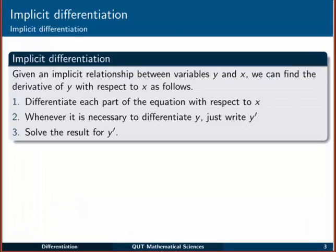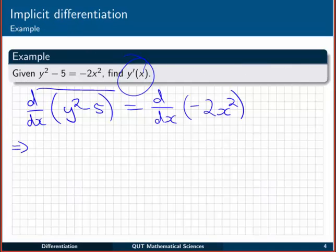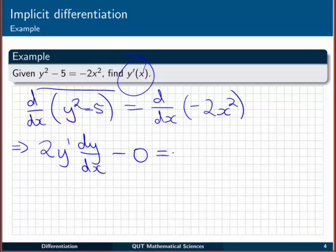We're going to get the derivative with respect to x of y squared. Now remember straight away that's a y, and we need to go to step 2 here. Whenever it's necessary to differentiate y, just write y dashed. We don't just have y, we've got y squared, so this is actually a chain rule. So we're going to go 2 times y to the 1, multiplied by the derivative of y, which is just dy dx. So it's the chain rule there. Then I've got to take away the derivative of 5 with respect to x, so that's minus 0. Over on the right hand side I've got the derivative of just a plain old constant multiple of a power of x. So that's going to be minus 2 by 2 is minus 4, x to the 2 minus 1 is just the 1. So I've got here 2y dy dx is equal to minus 4x.